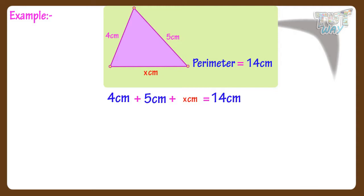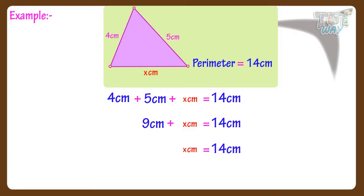Now let's solve this equation. 4 plus 5 gives us 9. So 9 centimeters plus x equals 14 centimeters. Solving the equation, we get x equals 14 centimeters minus 9 centimeters, and so x equals 5 centimeters. So the third side of the triangle is 5 centimeters. We need to subtract the sum of two sides from the perimeter of the triangle to get the length of the third side.